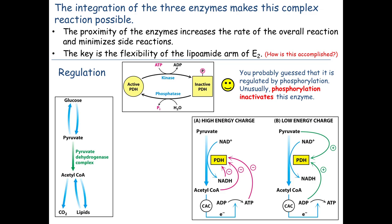This is an unusual regulation: normally when you phosphorylate an enzyme, you activate it. Here, phosphorylation inactivates pyruvate dehydrogenase — an unusual inactivation by phosphorylation. The logic is: abundant ATP activates the kinase, turning off the enzyme because you don't need more ATP. In the absence of abundant ATP, the phosphatase wins, removes the phosphate more often than it gets added, and you have an active pyruvate dehydrogenase complex to make more ATP.